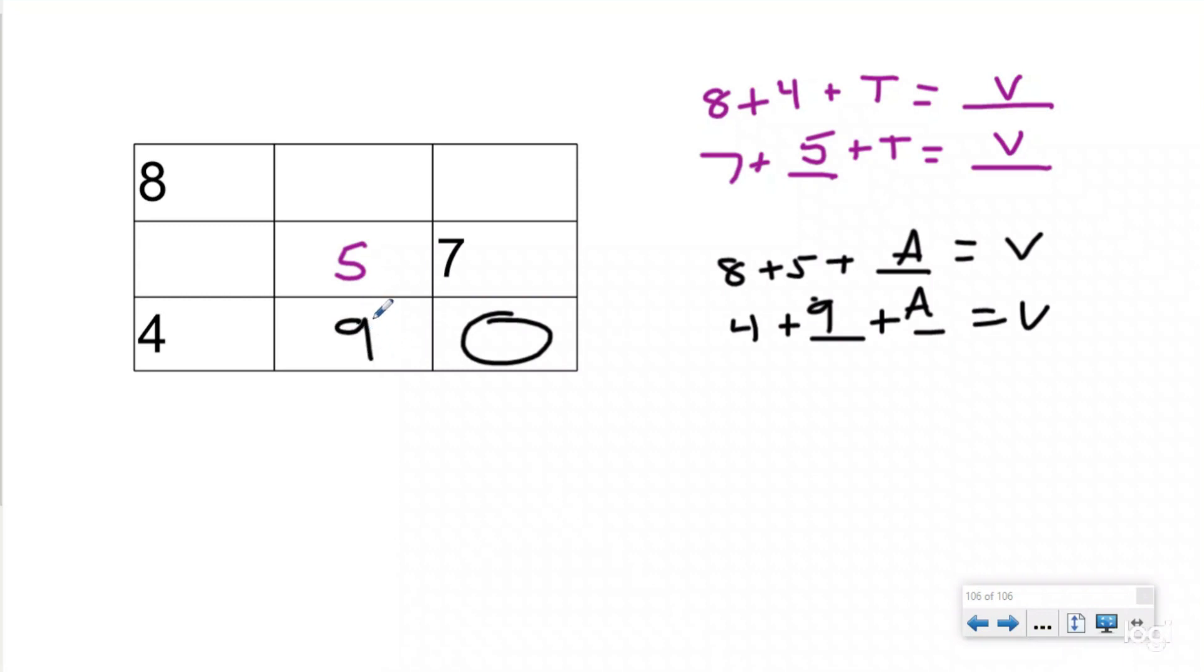So now I know that this is nine. Now I know that this number is nine. So really what we're doing is we're looking for which box can we find two addends, right, that share one of the boxes with another addend. So now we're going to try to figure out what b is, because I see that this box is shared with nine plus five and eight plus whatever this number is.